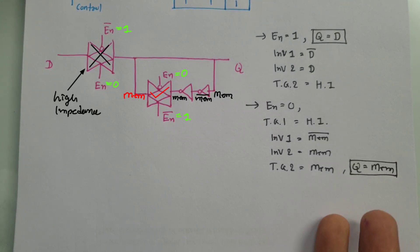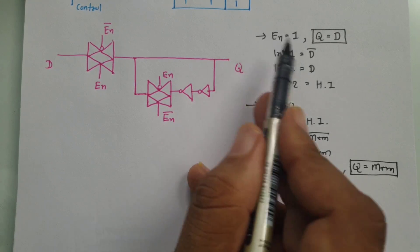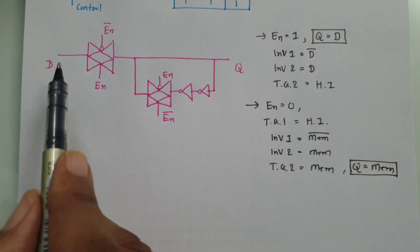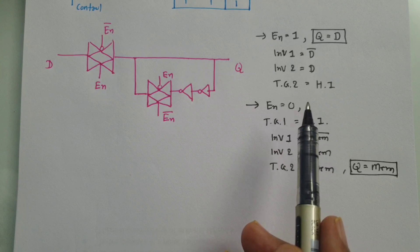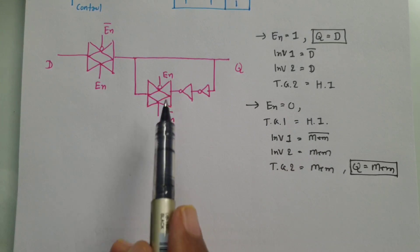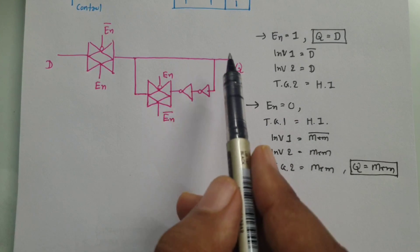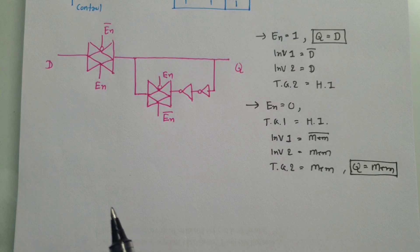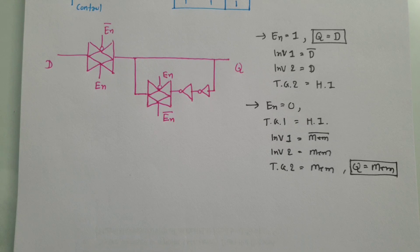This is how D latch functions — when enable is equals to 1, it will forward input to output, and when enable is equals to 0, it will hold previous memory data. This is what D latch implementation using transmission gate is about. I hope you have understood this video. Thank you for watching. Please give your valuable suggestions, as your suggestions matter and in future I'll be making videos to resolve your queries.